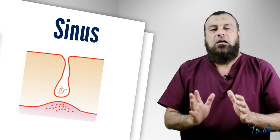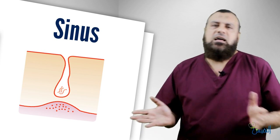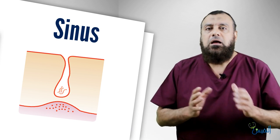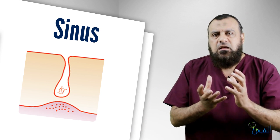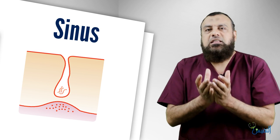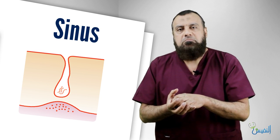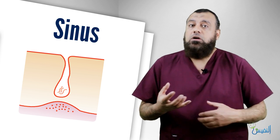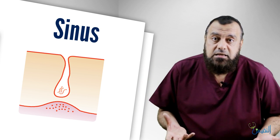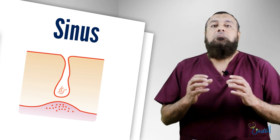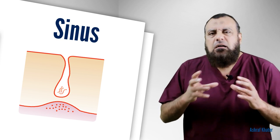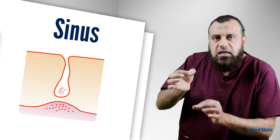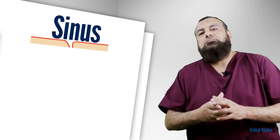A classic example is the pilonidal sinus — 'pilo' from hair. It is a sinus filled with pus, infection, and hair inside. It may occur opposite the sacrum at the back, or it may occur at the umbilicus. This is called pilonidal sinus — a sinus opening communicating into a blind abscess cavity.